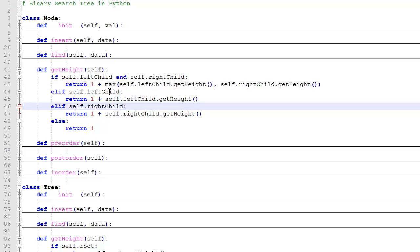And then if there's a left child, obviously there's not both, then we'll return one plus the height of the left child. And if there's only a right child, we'll return one plus the height of the right child.